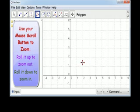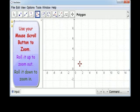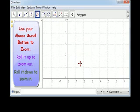We simply put our mouse pointer at the point that we want to have fixed, and we use our mouse scroll button to zoom out by rolling it up, or zoom in by rolling it down.